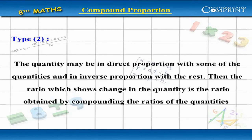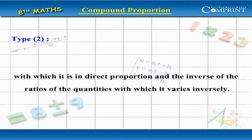Type 2: The quantity may be in direct proportion with some of the quantities and in inverse proportion with the rest. Then the ratio which shows change in the quantity is the ratio obtained by compounding the ratios of the quantities with which it is in direct proportion and the inverse of the ratio of the quantities with which it varies inversely.